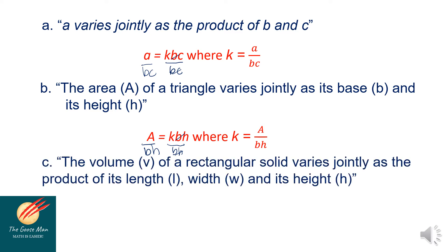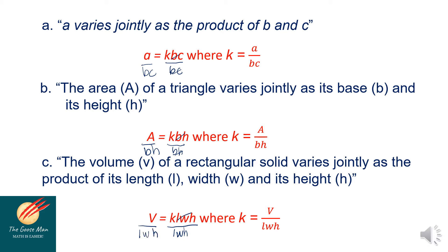The volume V of a rectangular solid varies jointly as the product of length l, width w, and its height h. In symbol, V is equal to k times l times w times h. Dividing both sides by length times width times height, k is equal to V all over l times w times h.